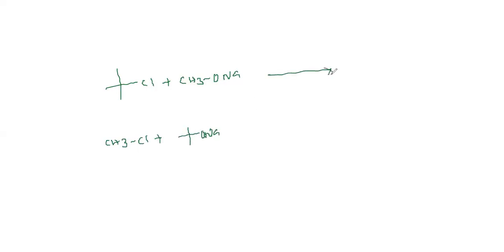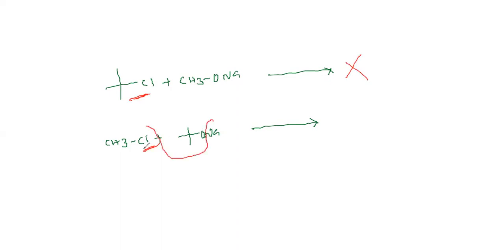Here we have a question: which one involves the reaction and which one does not? In this case it is tertiary — no reaction. Whereas in this case it is primary, so here loss of NaCl gives OCH3 — the ether product.